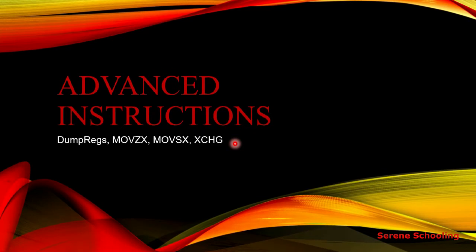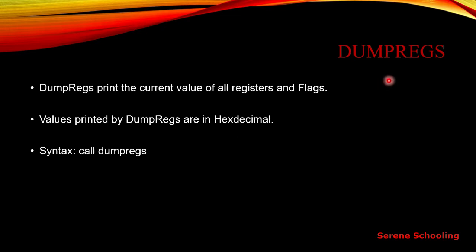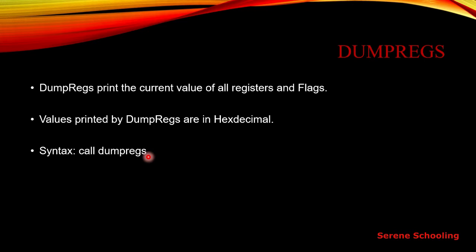Today we will learn about some advanced instructions. Firstly, we have the dump registers instruction — it shows the values of flags and the status of our registers on the screen. Dump registers prints the current value of all the registers and flags, and the values printed are in hexadecimal form. The syntax is: call dump_registers. It will show us the values of all the registers and flags. We will also see this through an example later on.